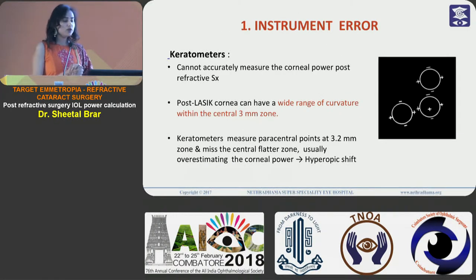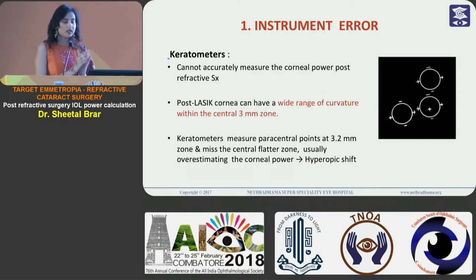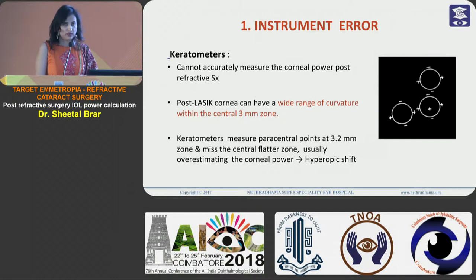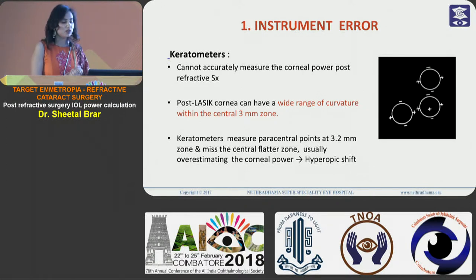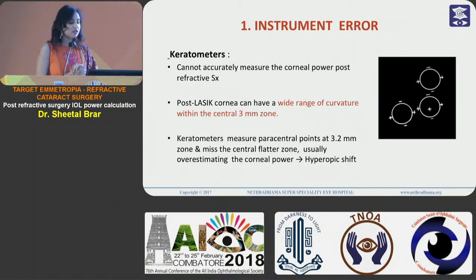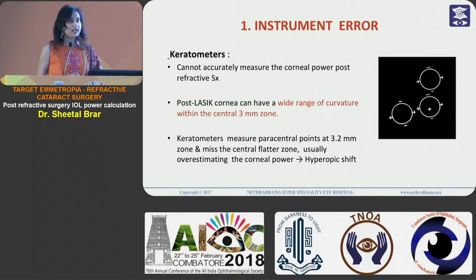Coming to the instrument error: our keratometers measure the paracentral points at the 3.2 millimeter zone and they miss the central flatter zone. So after refractive surgery, as the central part becomes flat, our traditional keratometers are not able to measure the corneal power accurately in this zone. After LASIK, the cornea can have a very wide range of curvature within the central 3 millimeter zone which these keratometers are not able to capture.